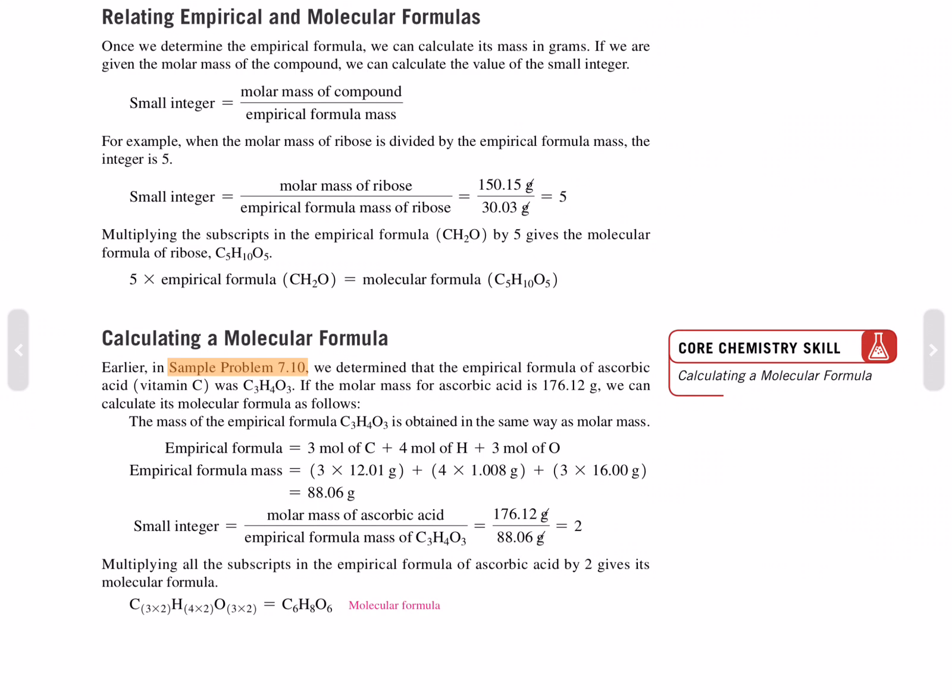The mass of the empirical formula C3H4O3 is obtained in the same way as molar mass. The empirical formula is 3 moles of carbon, 4 moles of hydrogen, 3 moles of oxygen. So 3 times carbon's mass, 4 times hydrogen's mass, 3 times oxygen's mass, gives a total formula mass of 88.06. The small integer is simply 176.12 divided by 88.06, which is 2. So everything gets multiplied by 2, giving C6H8O6.